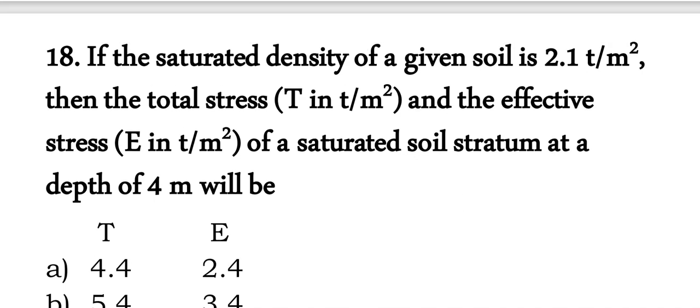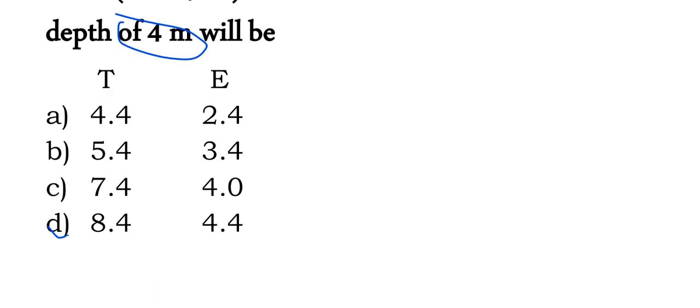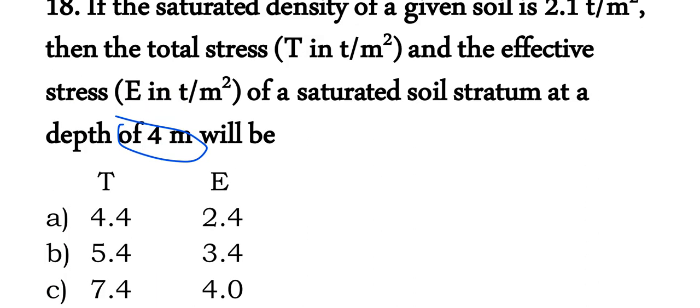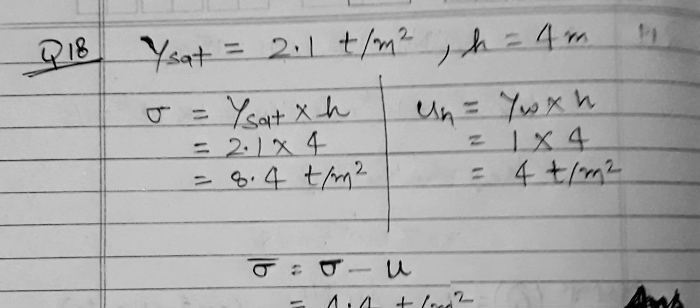Question 18: saturated density is 2.1 t/m³ and height is 4 meters. Total stress = 2.1 × 4 = 8.4 t/m². Option D is correct. Pore water pressure = γ_w × H = 1 × 4 = 4 t/m². Effective stress = total stress − pore water pressure = 8.4 − 4 = 4.4 t/m².